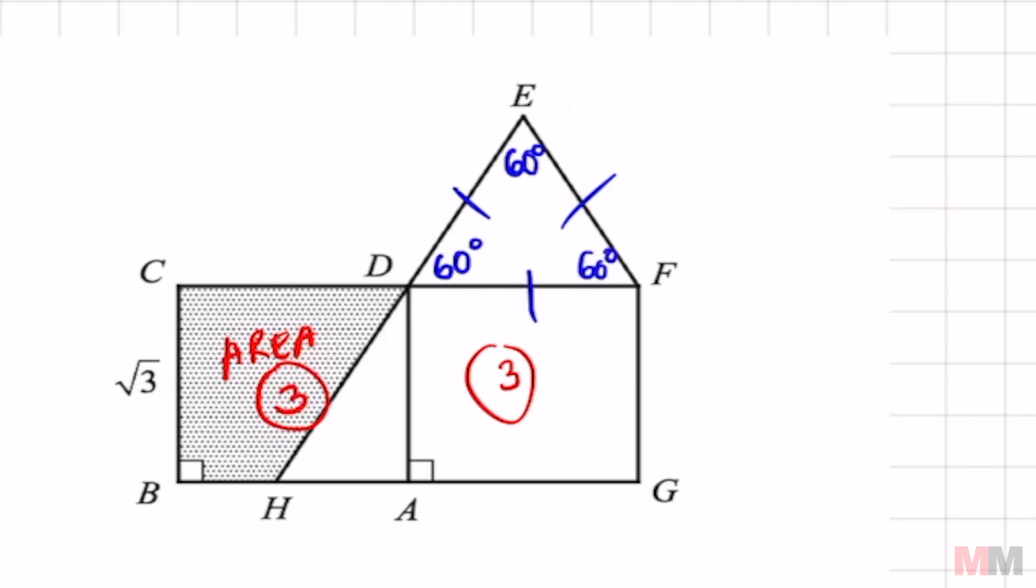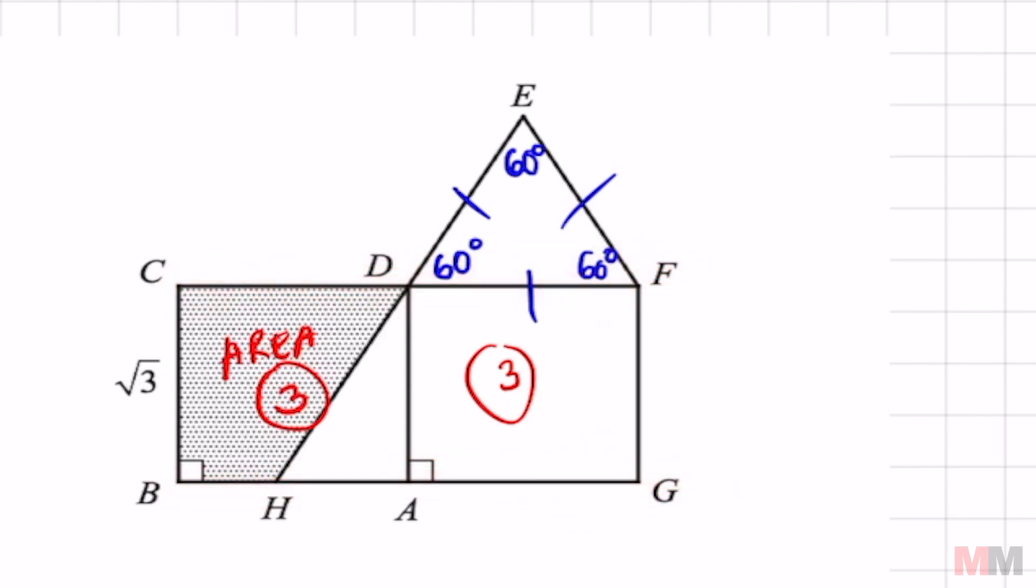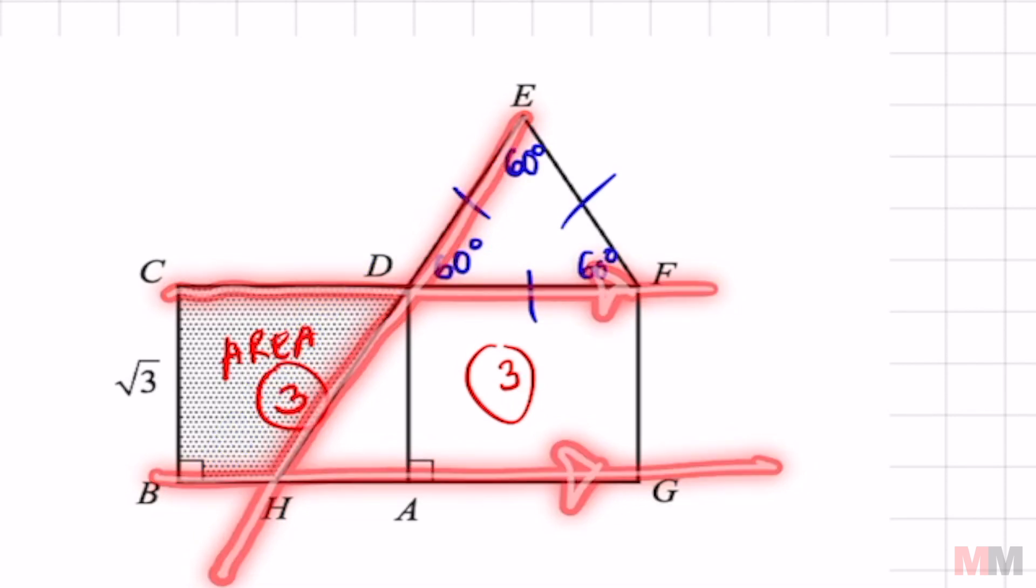These two are squares. And since these two are squares, then these two line segments are going to be parallel. And the last important information that is not given to us is that this line EH is your transversal that cuts through these two parallel lines. So why do we need that?